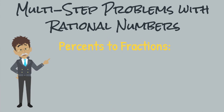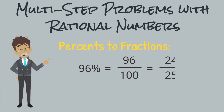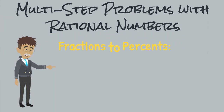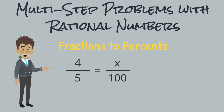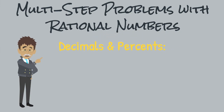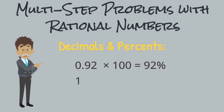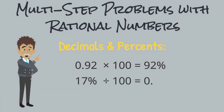A percent is a number out of 100. To convert a percent to a fraction, write the percent as the numerator and 100 as the denominator, then simplify. The easiest way to convert a fraction to a percent is to use a proportion — set the fraction equal to an unknown out of 100 and solve for the percentage value. Because decimals involve place value, we can multiply a decimal by 100 to convert to a percent, or divide a percent by 100 to convert to a decimal.